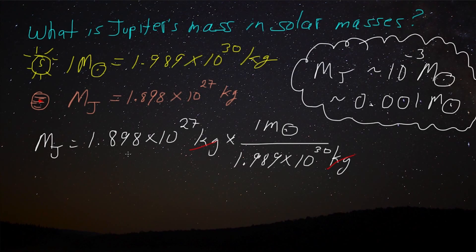So let's, first of all, let me go ahead and just divide 1.898 by 1.989. That gives me 0.954 times 10 to the 27 minus 30. That's minus 3. Solar masses.